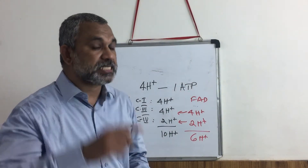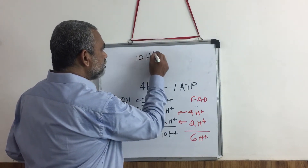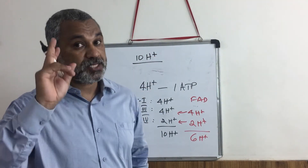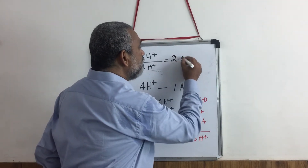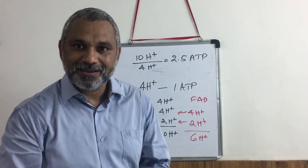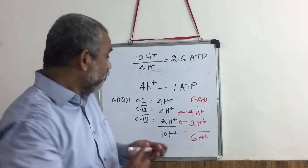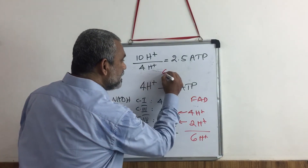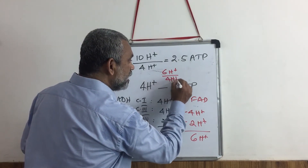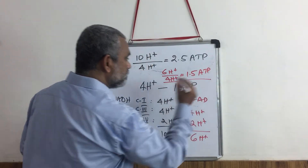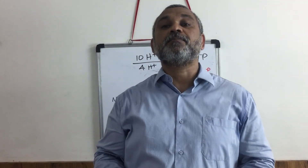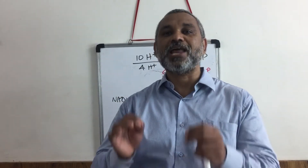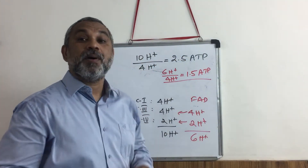So for 10H+ that is transferred by an NADH — for every 4H+, 1 ATP molecule — 10H+ divided by 4H+ equals 2.5 ATP molecules. That is how the 2.5 comes. For every FADH2, totally 6H+ divided by 4H+ equals 1.5 ATP molecules. So you understand the logic of saying that 2.5 ATP molecules are made from an NADH and 1.5 are made from an FADH2. This is what is known as P by O ratio.